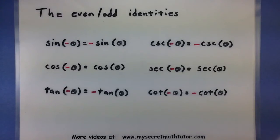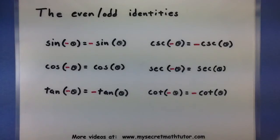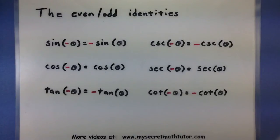Now, you may be looking at all of these different identities and say, well, this looks awesome, I've got lots of tools to work with, but why is it that you can move out the negative sign sometimes, and other times it just disappears? To understand what's working in the background of these identities, it's best to look at the graph of sine and cosine.